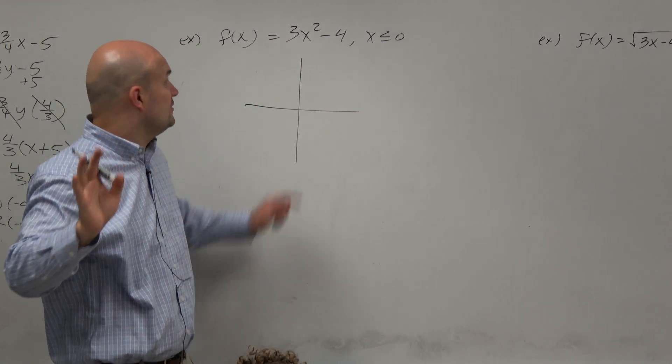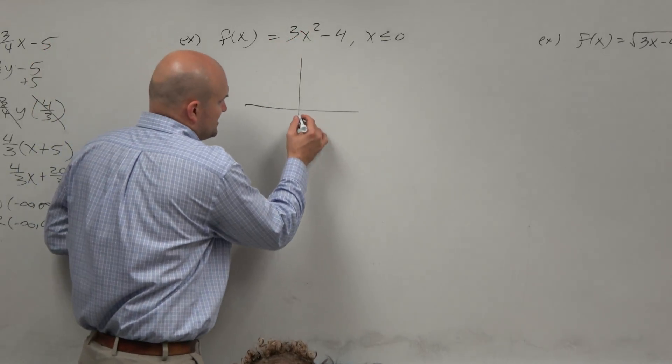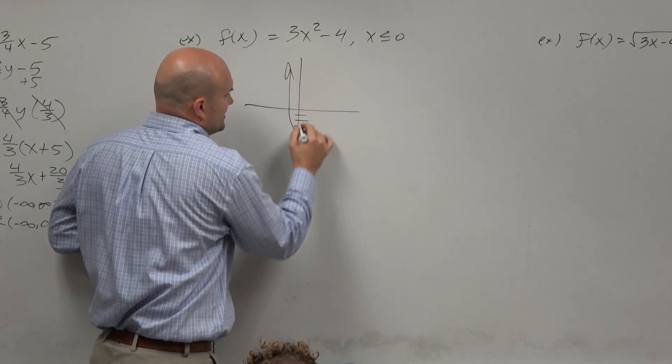You say, oh, I know, I know. That's a vertical stretch of 3 that's shifting down 4, right? So we say 1, 2, 3, 4. Looks something like this.